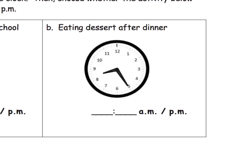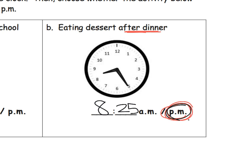What about eating dessert after dinner? After dinner, so that's going to be a PM. Looking at our clock, the minute hand — starting at 12, you go 5, 10, 15, 20, 25 — so that's 25 minutes. And we can see that the hour hand is between the eight and the nine, so we know that's going to be eight o'clock. So it's 8:25, and we know it's 8:25 PM because we're doing something after dinner.